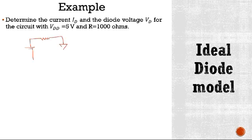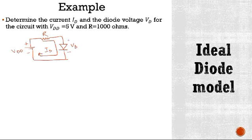Suppose this is your ideal diode, this is Vd, this is Vdd, this is R. This is an ideal diode and this is the direction of current Id. So how are you going to start your analysis? First you will apply KVL.